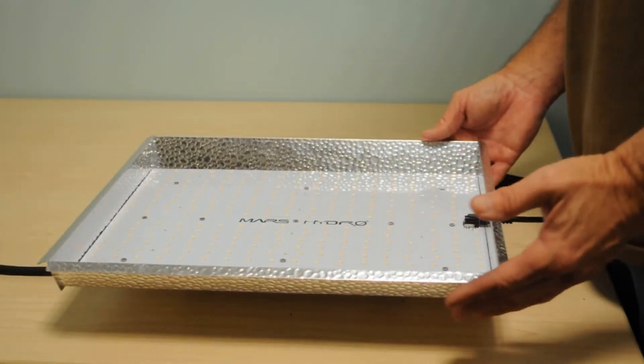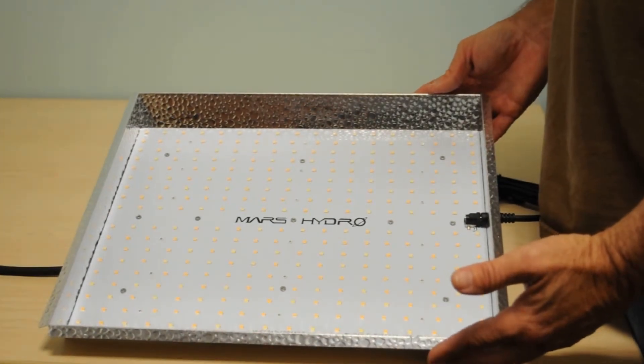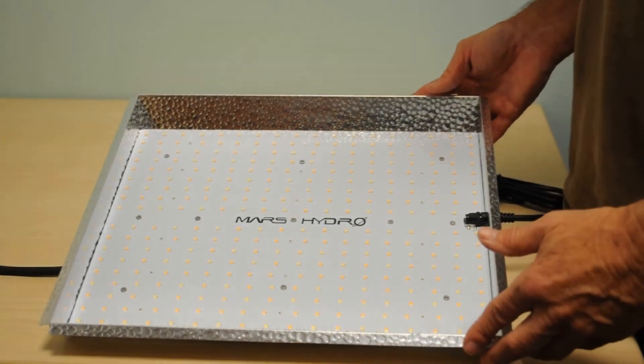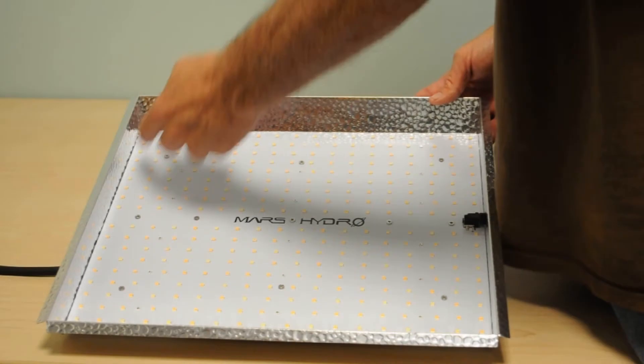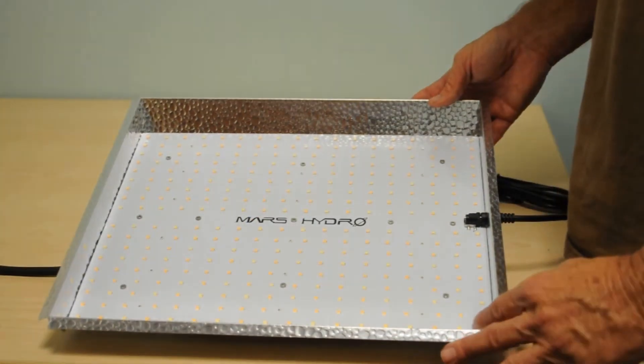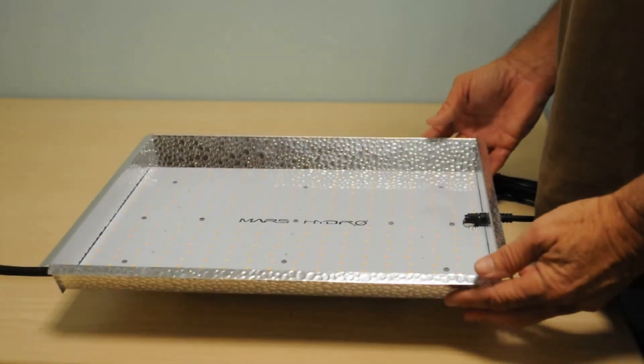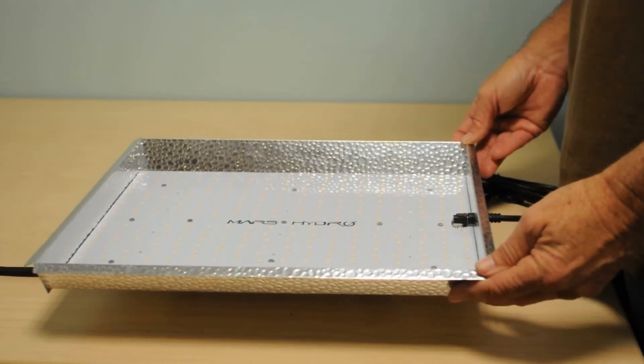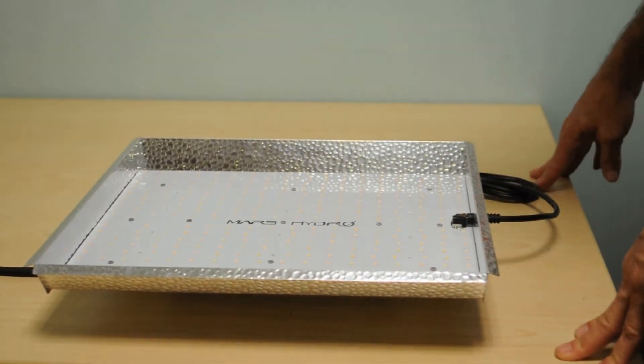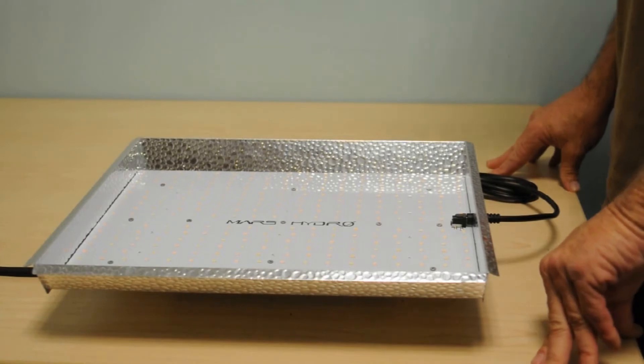Okay, here's our Mars TS 1000, brand spanking new right out of the box. The light uses quantum board technology. There's an 11 by 14 inch quantum board with 342 LEDs. Now according to the Mars website, the LEDs are white light, warm white light, and additional red and infrared light LEDs as well.